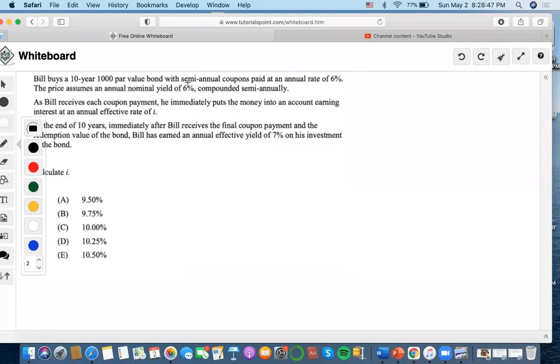It says that Bill buys a 10-year $1,000 par value bond with semi-annual coupons paid at an annual rate of 6%. So 6% divided by semi-annual is 3%. So 3% times $1,000 par value would get $30 coupons. Now, the price assumes an annual rate of 6% semi-annually, so this is going to be 3% as well.